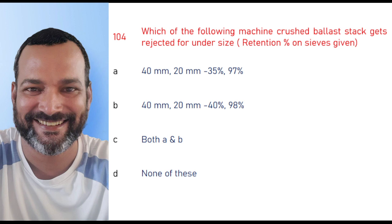Which of the following machine crushed ballast stack gets rejected for under-size? The retention percentage on the sieve: on 40 mm sieve if 35% retention and on 20 mm sieve if less than 97% retention — the right option is 40 mm: 35% and 20 mm: 97%.